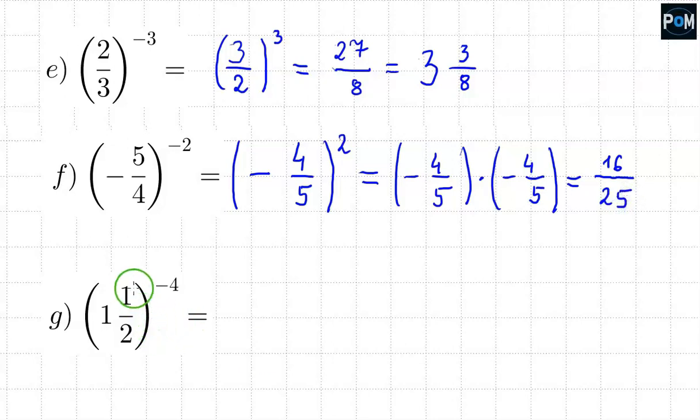In example g, we also have a fraction. So we'll proceed similarly to examples e and f. But here, you can't immediately do the inverse, because there are wholes. So you first have to deal with these wholes. We need to convert this to an improper fraction. The 2 will be at the bottom.